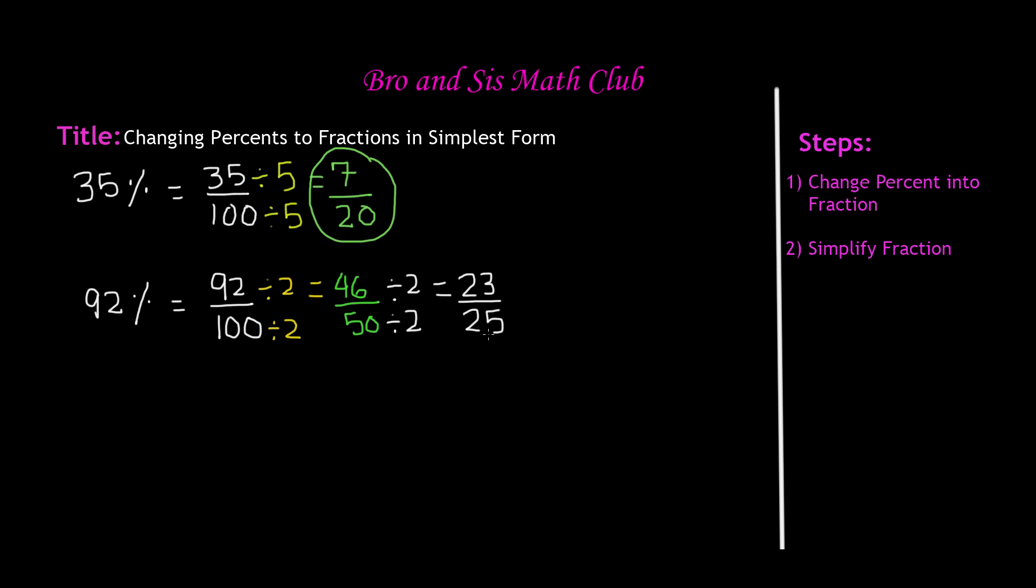And 23 and 25, there's no other number that you can divide both of these into, so that means 23 over 25 is our final answer. So 92% is equal to 46 over 50, which can be reduced to the simplest form of 23 over 25.